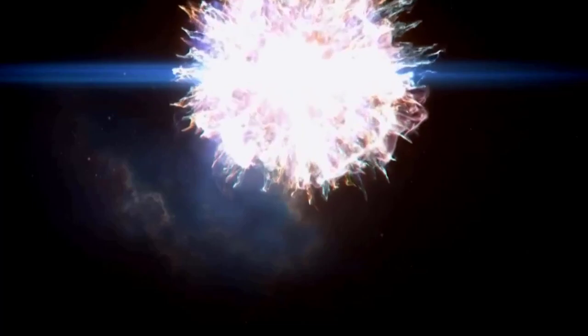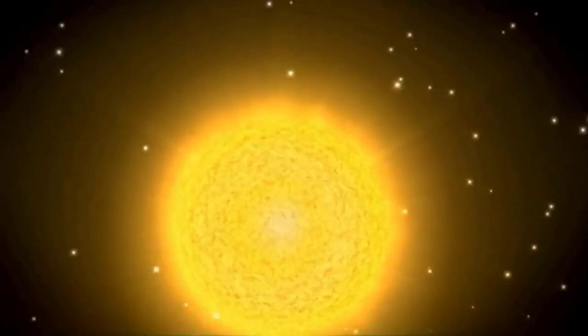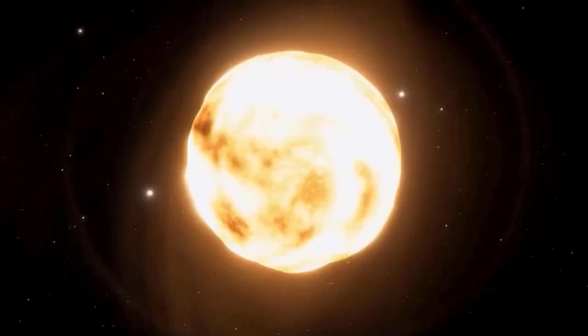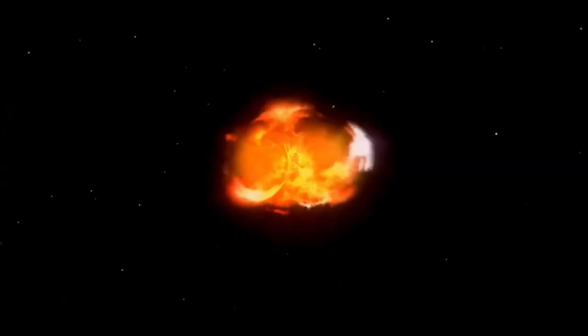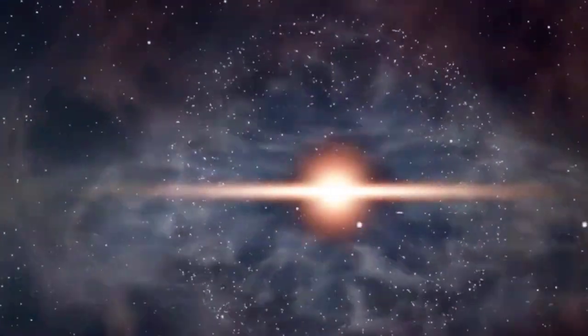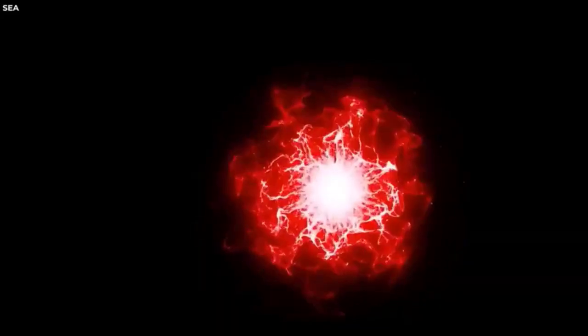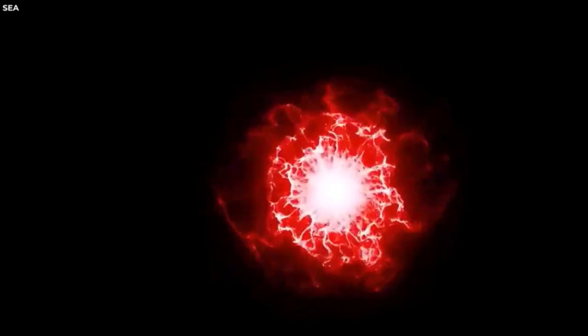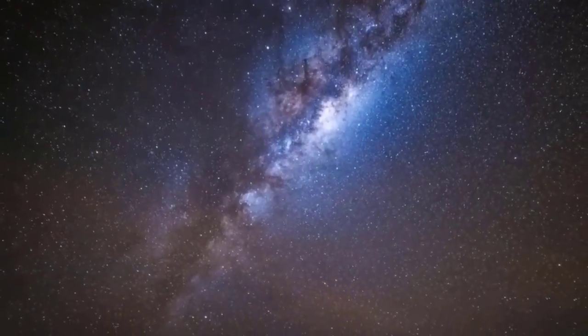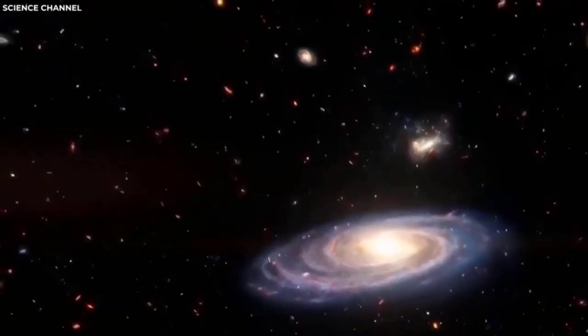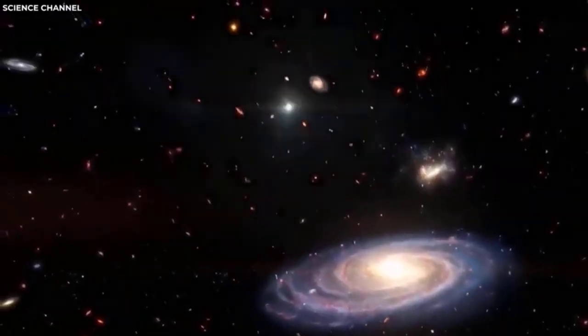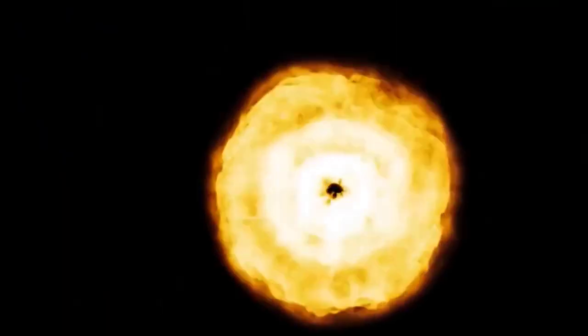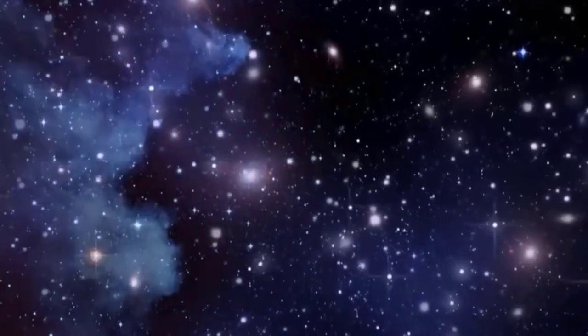Betelgeuse is a celestial marvel that graces the night sky with its presence. This iconic red supergiant, nestled in the Orion constellation, has captured the awe and imagination of stargazers for generations. However, recent observations and updates by world-renowned physicist Michio Kaku have stirred concern. It is believed that Betelgeuse has finally exploded. How might this explosion reshape our understanding of stellar life cycles and the forces that shape our universe? What does it mean for humans?